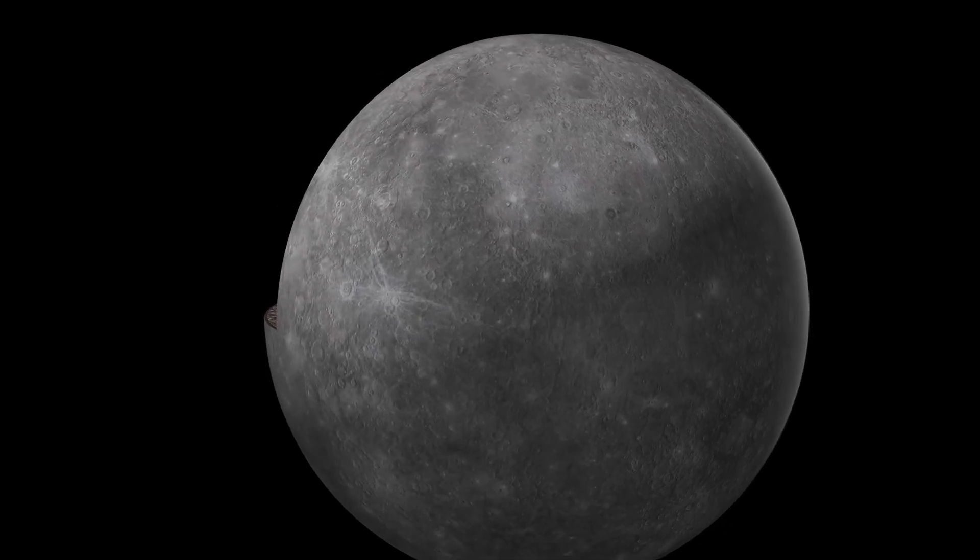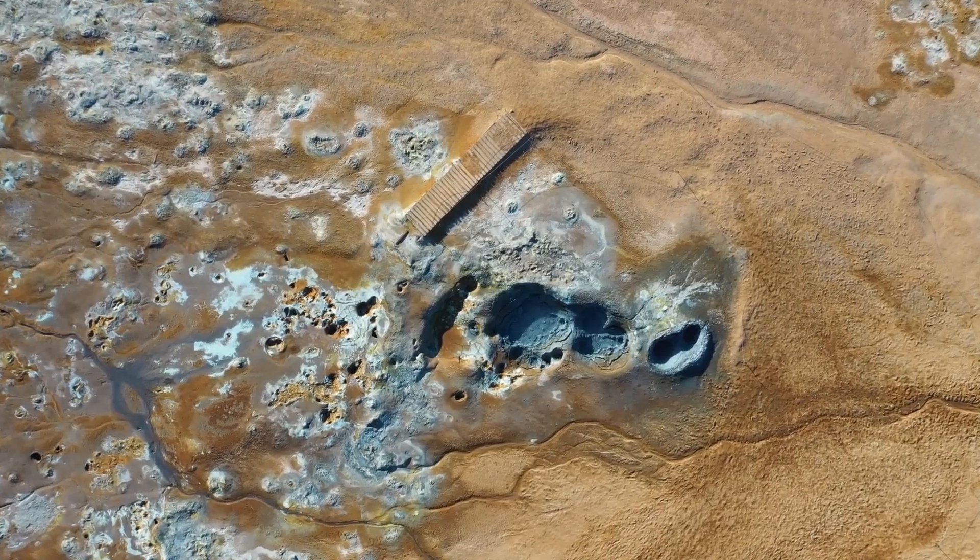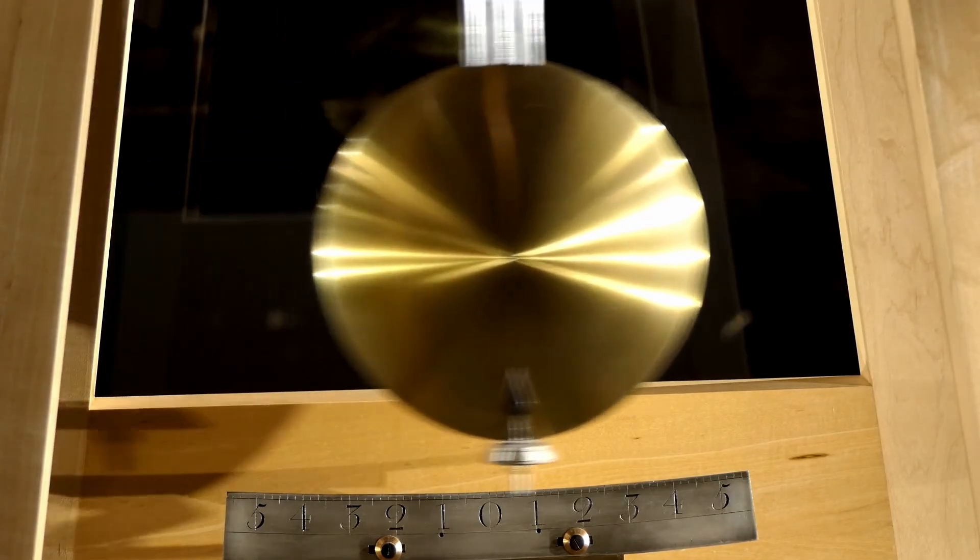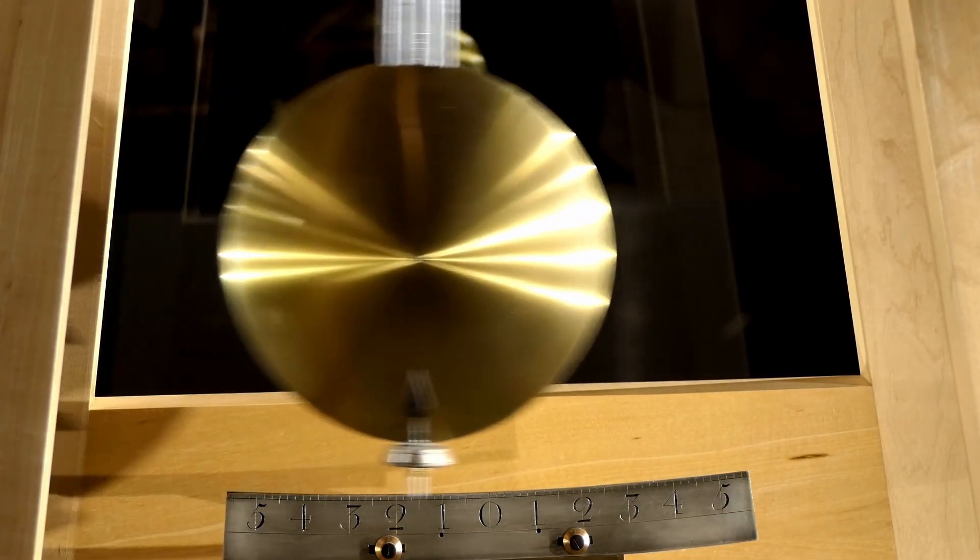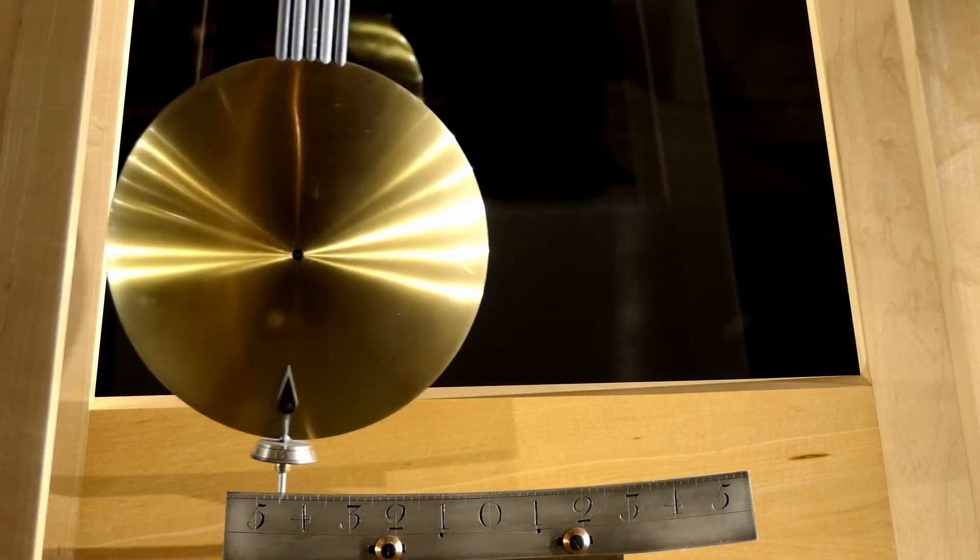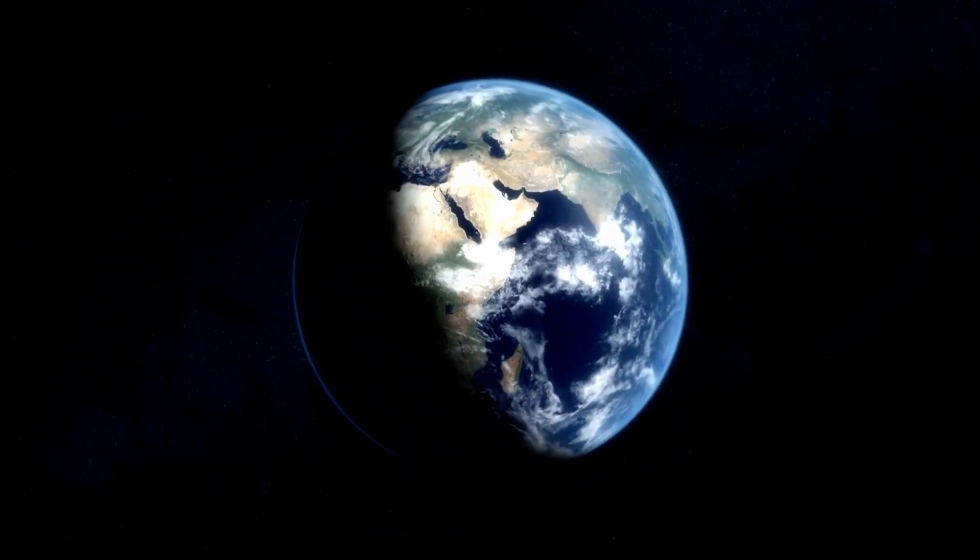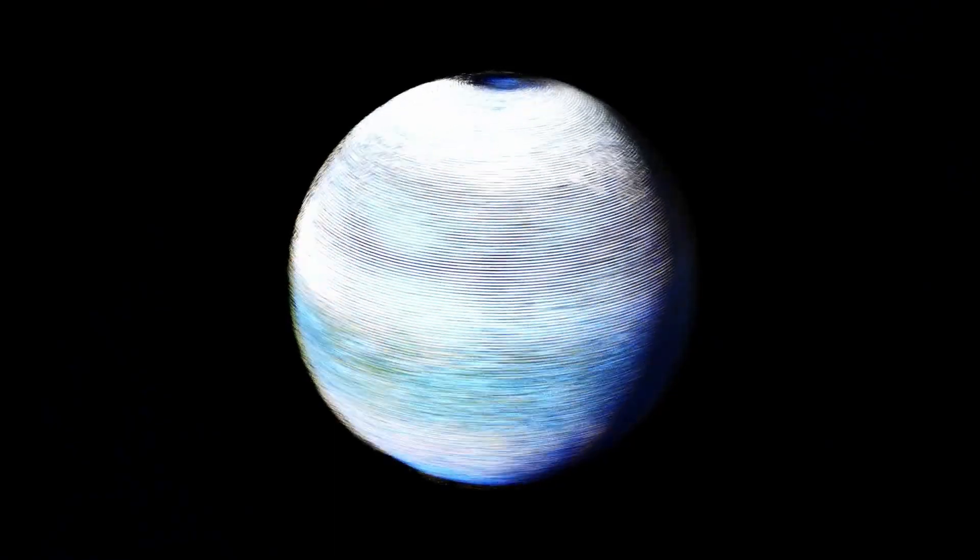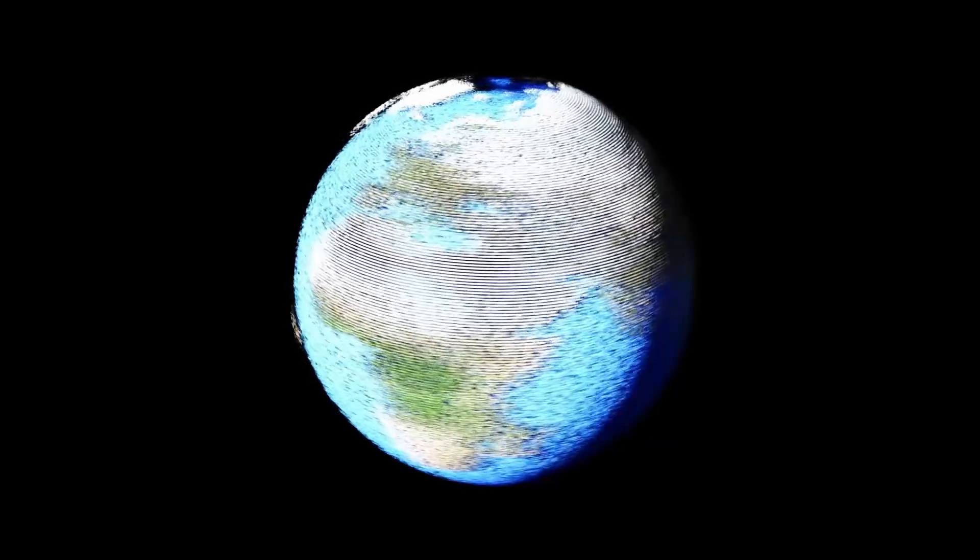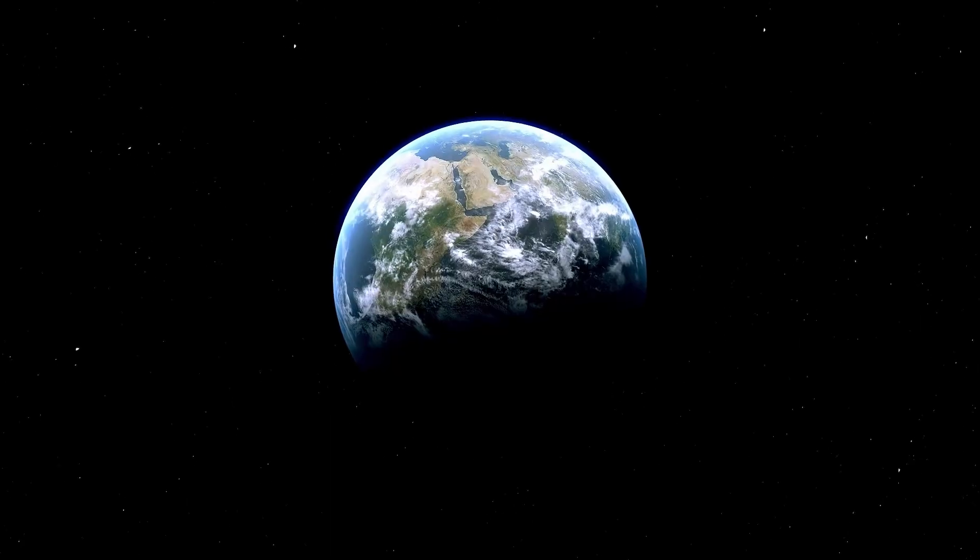Gravitational assist basics explain how a planet's motion can accelerate or redirect a passing object. For 3I/Atlas, the effect is subtle but measurable. The comet's trajectory bends as it passes each planet, but the overall path remains hyperbolic, an open curve that will eventually fling it back into interstellar space. What stands out isn't the physics but the sequence: Mars first, then Venus, each within a narrow window of time and space. Calculating these encounters requires precise knowledge of planetary positions, comet speed, and the sun's gravitational pull, all of which have been confirmed by independent teams using NASA's Horizon system and JPL's DE441 planetary ephemeris.